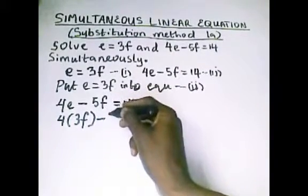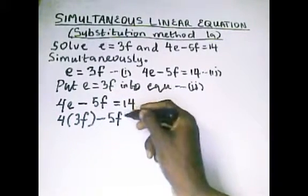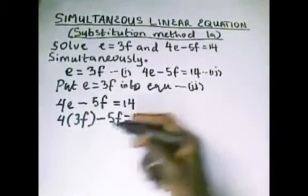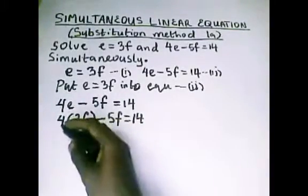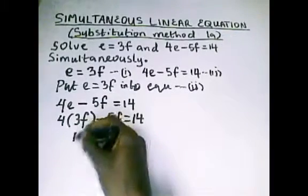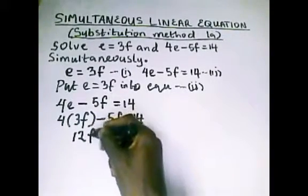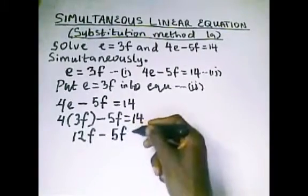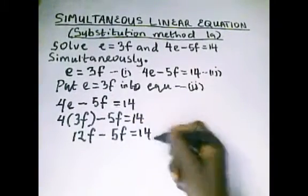Then over here we write minus 5f equals 14. Now in our previous lessons, you know that the bracket means times, so 4 times 3f will give us 12f, then we have minus 5f, and that equals 14.